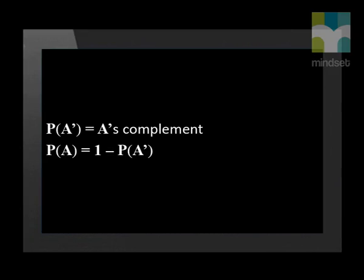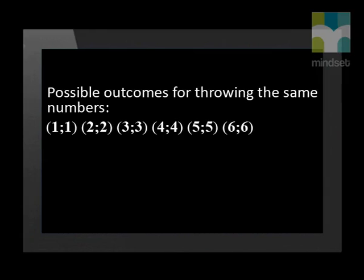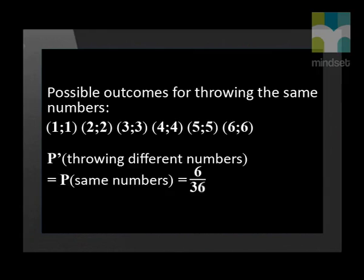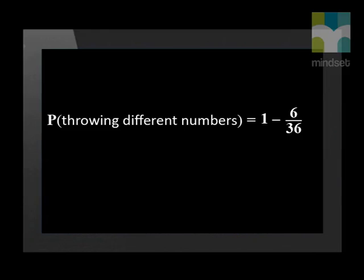Event A and the complement of A will always add up to one. For example, if we throw two dice, what is the probability of getting two different numbers? There are 36 different outcomes in total, and it would take too long to list all of them. It's much easier to use the complement: if we focus only on rolling two of the same numbers, there are only six such outcomes, so the probability of rolling two of the same numbers is 6 over 36. Using the complement rule, the probability of throwing different numbers is one minus 6 over 36, which equals 5 over 6.